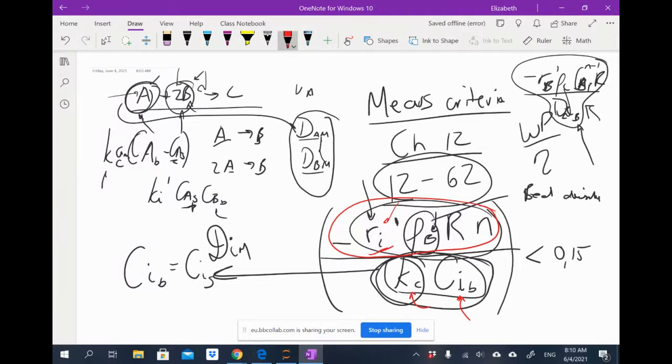I can actually perform a component-by-component test to discover which of the components is limiting. This is built into my Mears criteria. When I finally model my reaction, I can decide which of the components to use in the mass transfer equation—in the Ci bulk minus Ci surface mass transfer. I will only consider one of the components, and that's the one for which the Mears criteria gives me the highest value. So that is something completely new. It's not for the test for first order systems.